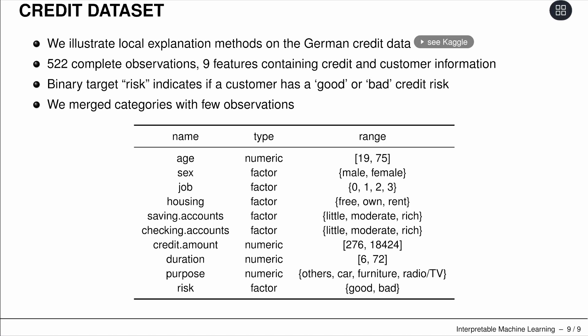As a primer for the following videos, I will often use the German credit dataset to do some local explanations. This dataset has 522 complete observations with nine features such as age, sex, housing, and so on. The label we'd like to predict is whether the bank says there's a good or bad credit risk attached to the input features. Some categories with few observations are merged to keep things simpler, but this should give a nice intuition of how local explanations work.